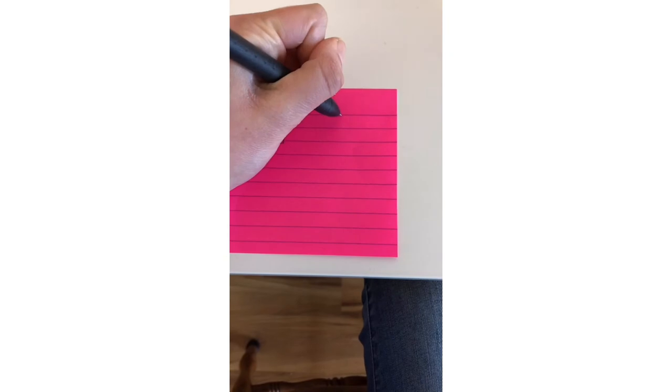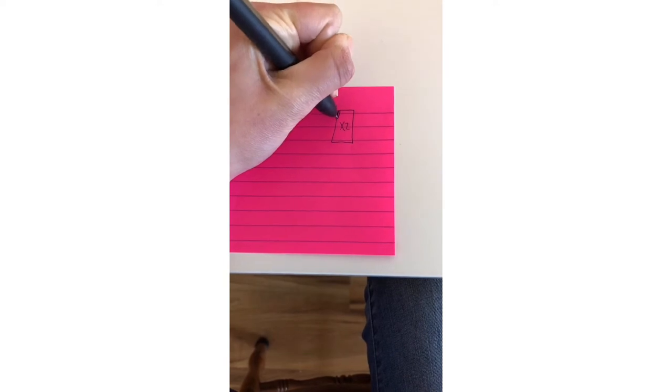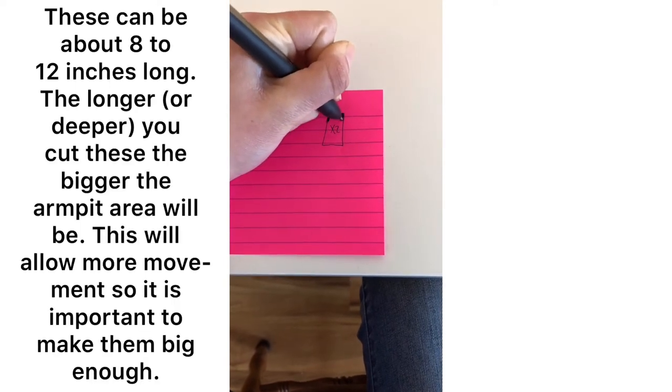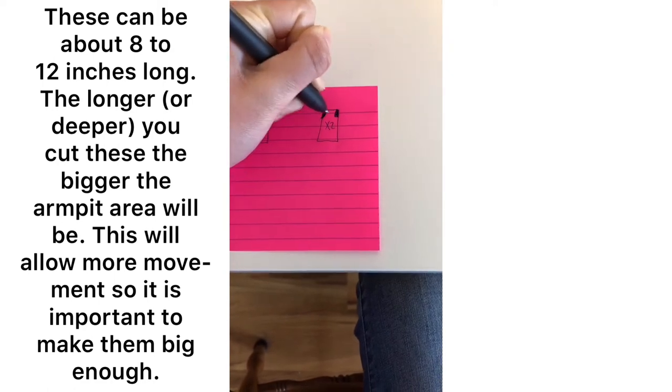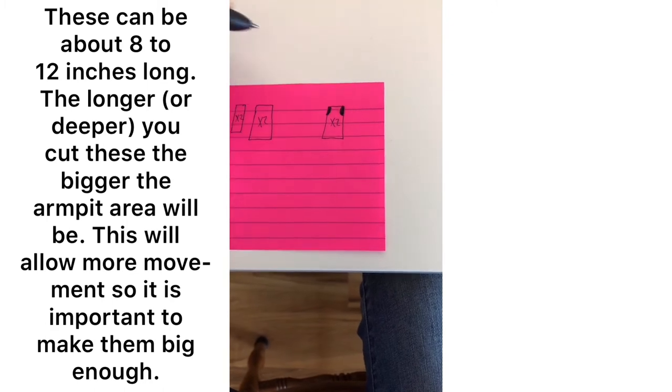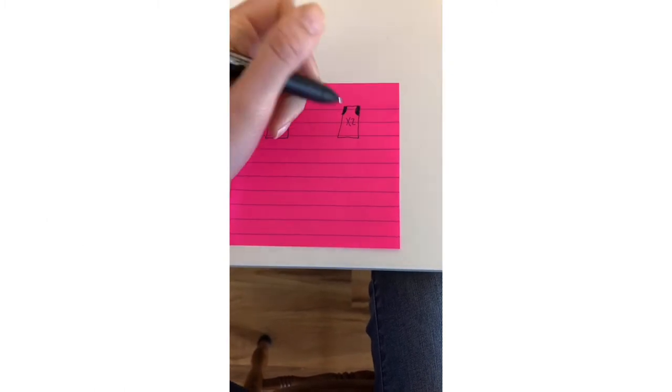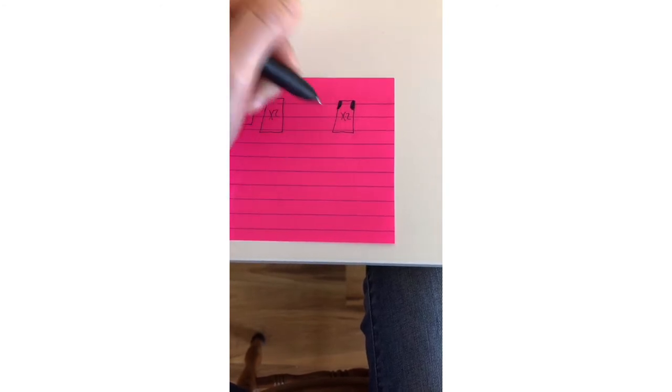So what you're going to go ahead and do is you're going to take that piece and you're going to cut out little armhole slits. Try and make those a little more even, this is just a demonstration it's not perfect. That's what you want it to look like, both of your pieces of fabric you can just lay them one on top of the other.